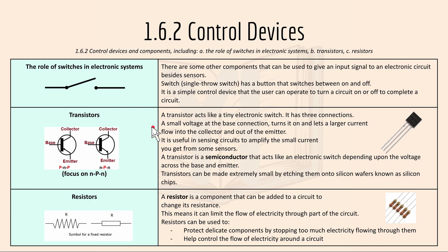A transistor acts like a tiny electronic switch that has three connections. A small voltage at the base connection turns it on and lets a larger current flow into the collector and out of the emitter. It is usable in sensing circuits to amplify the small current you get from some sensors. A transistor is a semiconductor that acts like an electronic switch depending upon the voltage across the base and emitter, and it can be made extremely small by etching them onto silicon wafers known as silicon chips.